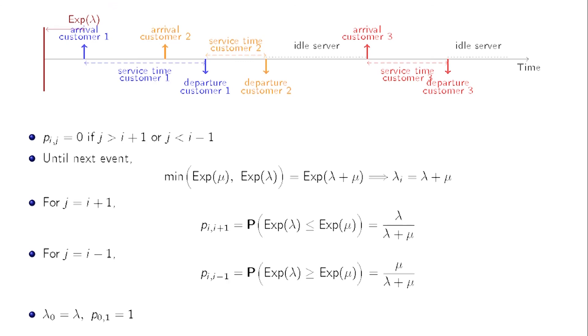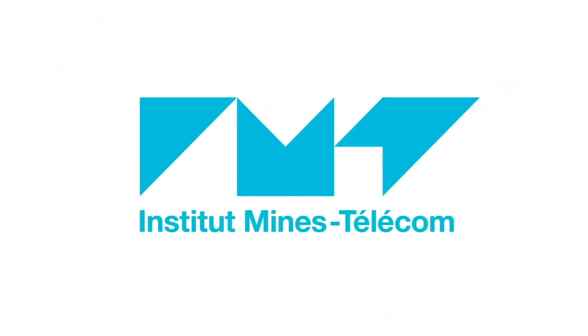If i is 0, no departure can occur. So, the next event happens in an exponential time of parameter lambda. This means lambda_0 equals lambda and p_{0,1} equals 1.